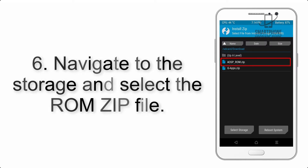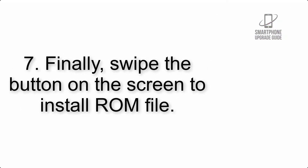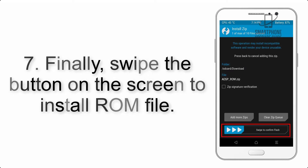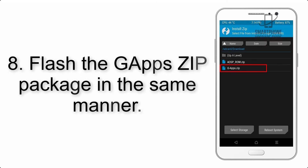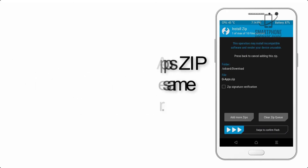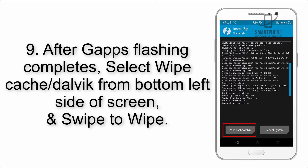Step 5: Go back to the recovery main screen and tap on the Install button. Step 6: Navigate to the storage and select the ROM zip file. Step 7: Finally, swipe the button on the screen to install the ROM file.